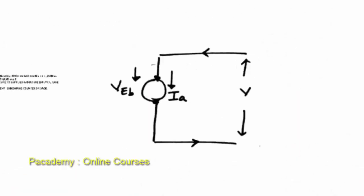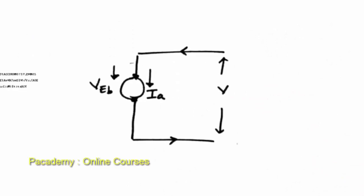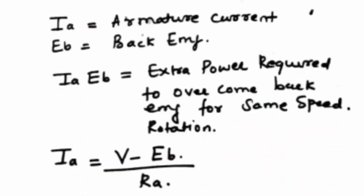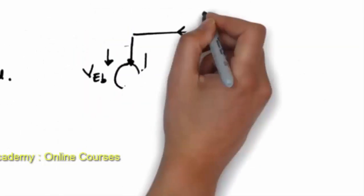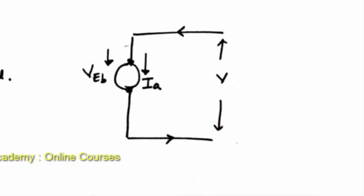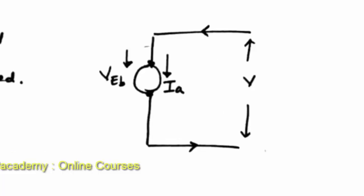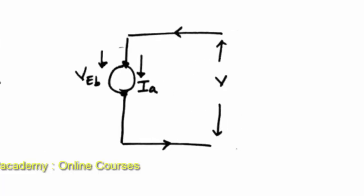If IA is the armature current and EB is the back EMF, then IA multiplied by EB is the extra power that the armature must overcome to maintain the speed of rotation or keep the torque constant. The armature current can be given as: IA equals V minus back EMF, divided by the resistance of the armature. The back EMF opposes the supply voltage and governs the armature current — the more the back EMF, the less the armature current, and vice versa.